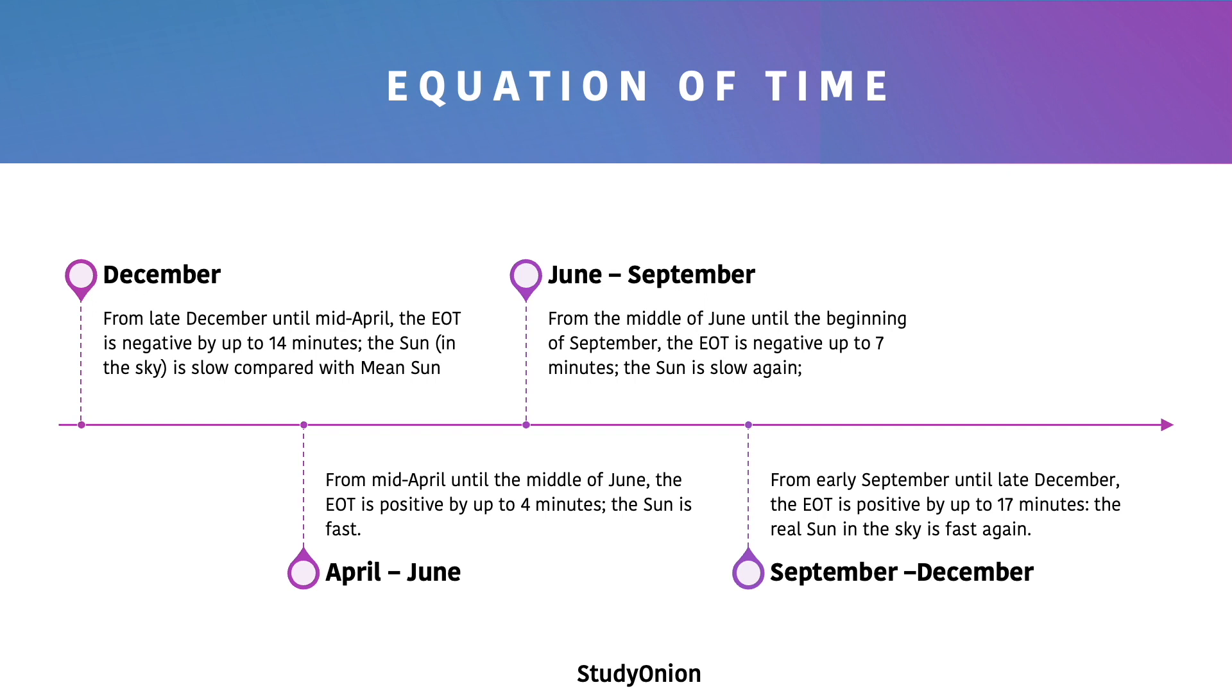And from early September until late December, the EOT is positive again by up to 17 minutes. The real sun in the sky is fast again.